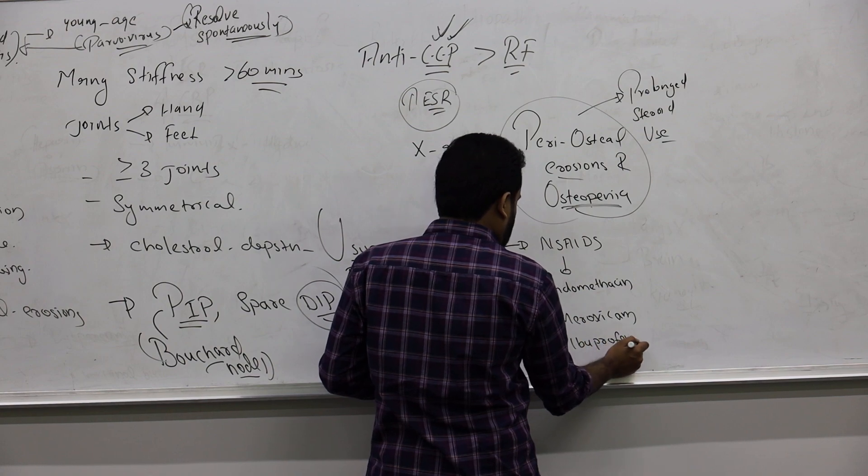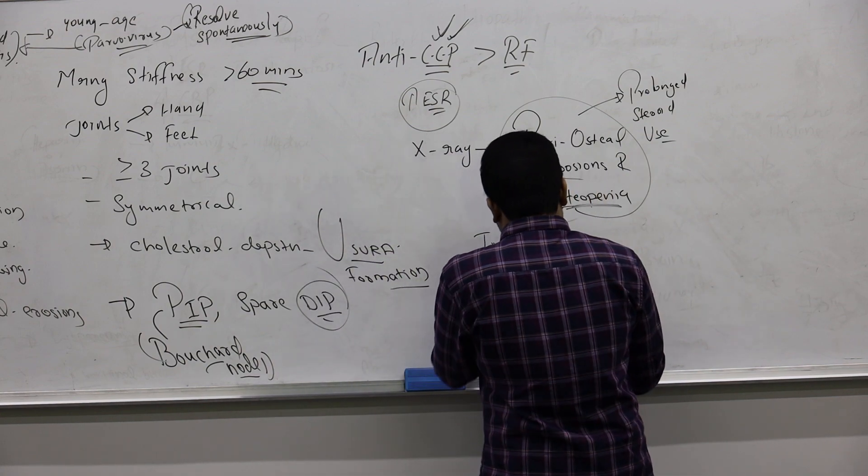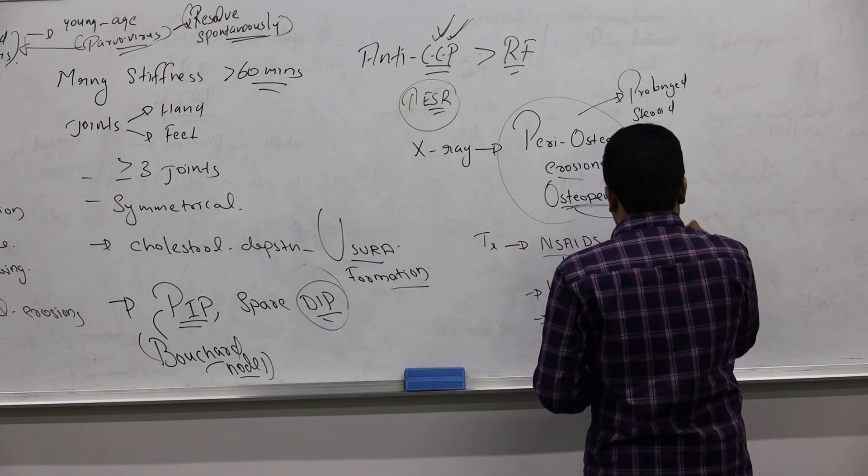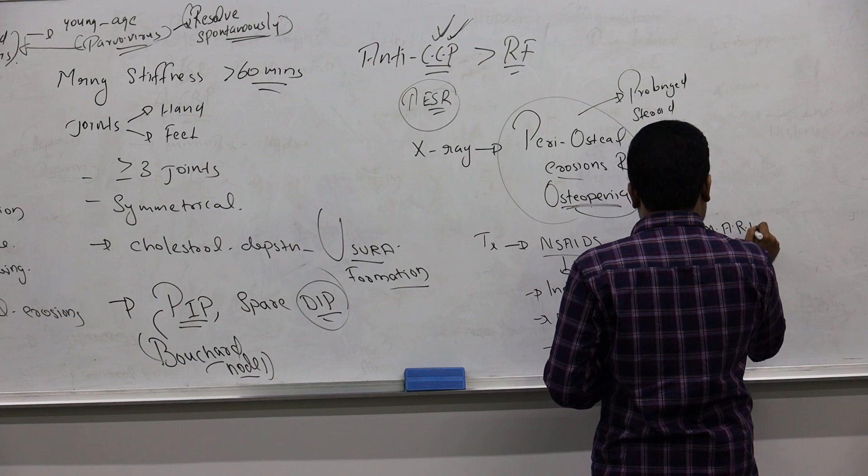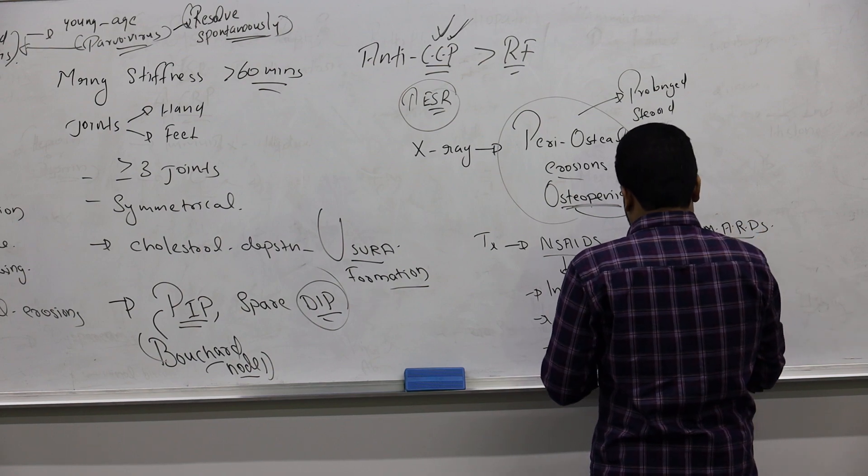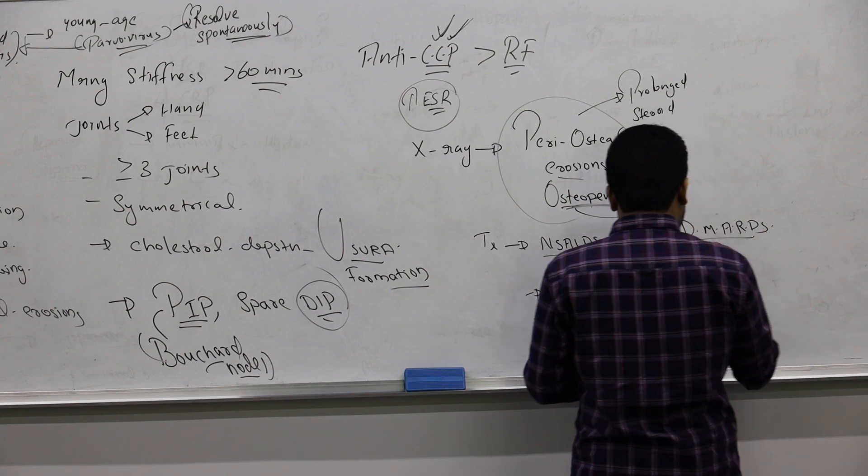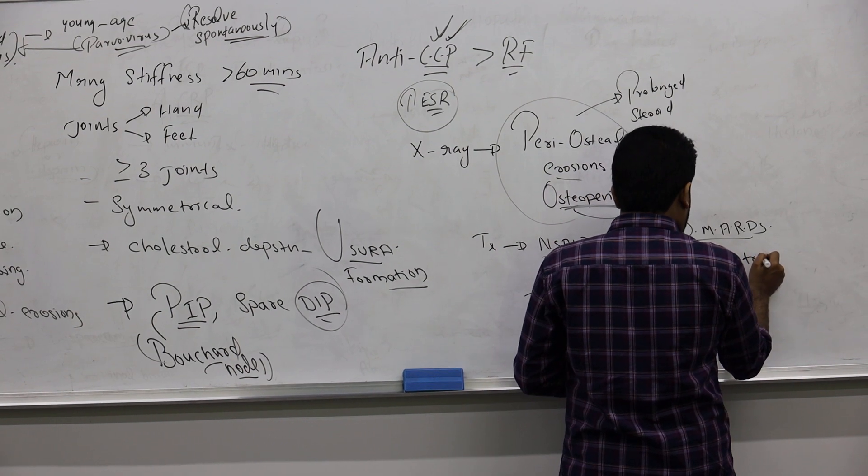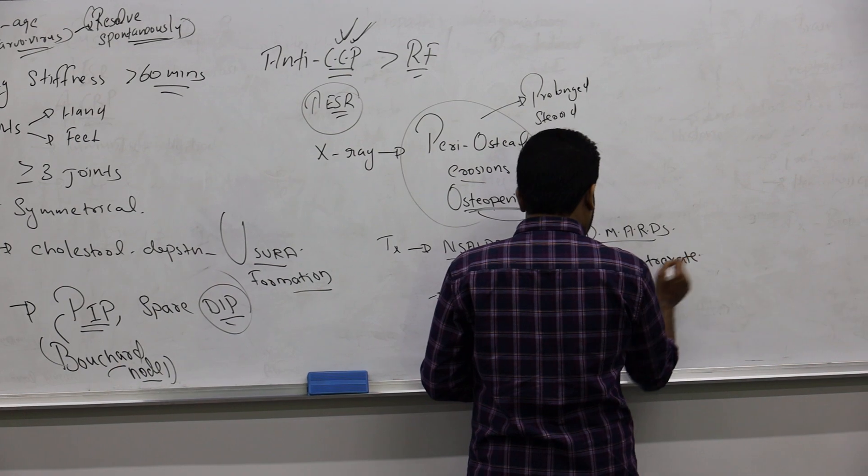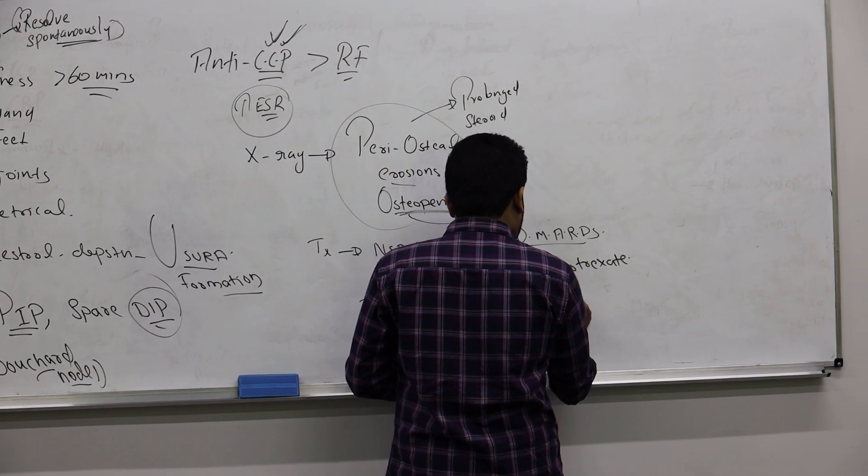Anything, but never give only NSAIDs. You have to add disease-modifying anti-rheumatoid drugs, like you might have heard about methotrexate. Always go with the first choice: methotrexate or leflunomide.